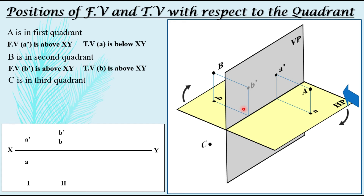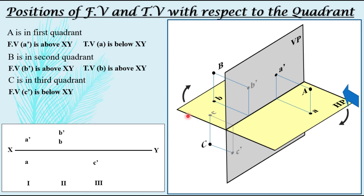Let us take point C in the third quadrant. Looking from this same side, C' can be seen below the XY line, whereas the top view C can be seen on the horizontal plane. For the third quadrant, the front view C' is below the XY line. When you rotate the horizontal plane clockwise 90 degrees, C will come up and will be above the XY line.